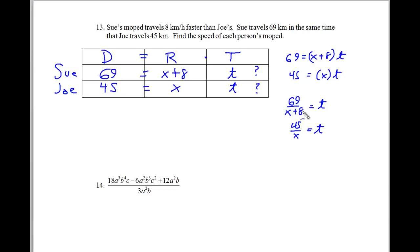And what this means then is that this is a transitive property problem. Which means that 69 over x plus 8 equals t and 45 over x equals t. Therefore, this is equal to this. The transitive property says that if a is equal to b and a is equal to c, then b is equal to c. So we can just set these equal to each other. Because the time was the same.